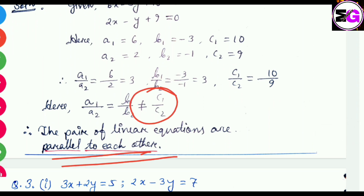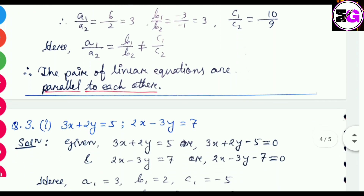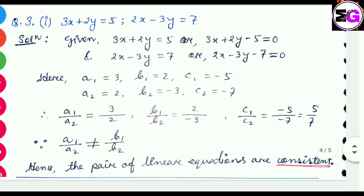Here we can see that the ratios a1 by a2 and b1 by b2 are equal, but not c1 by c2. That is, a1 by a2 equals b1 by b2, which is not equals to c1 by c2. Then we can say that the pair of linear equations are parallel to each other.